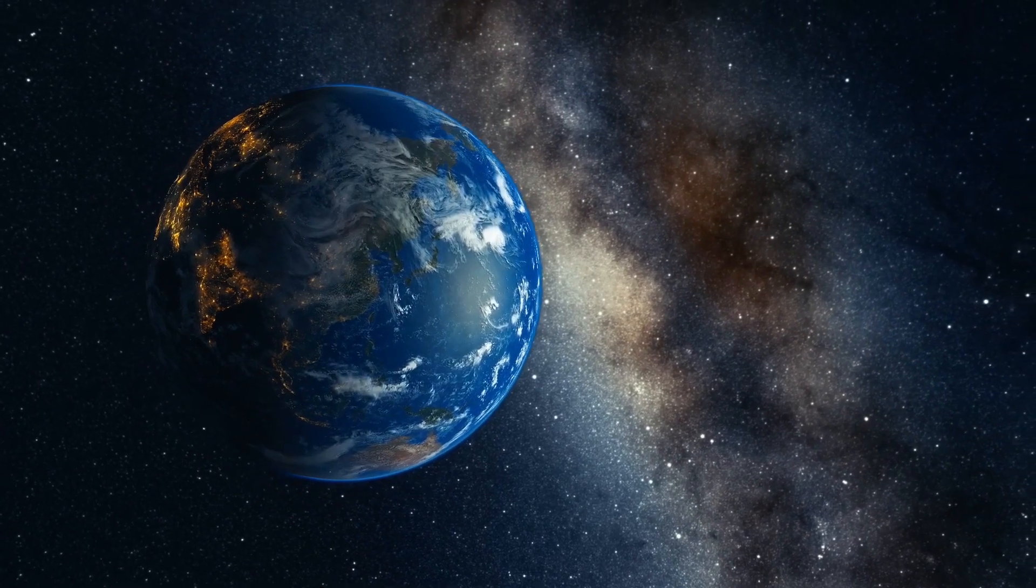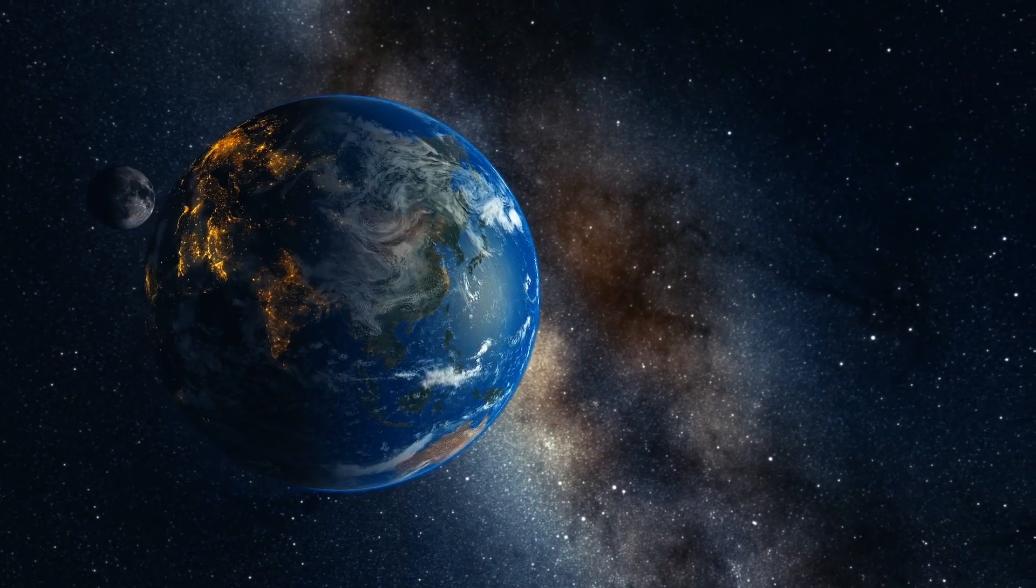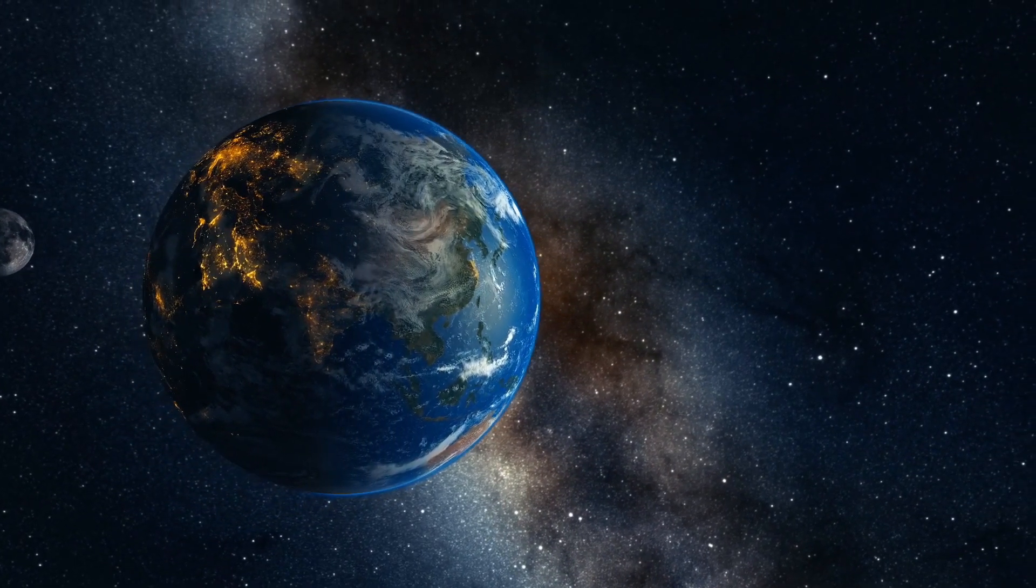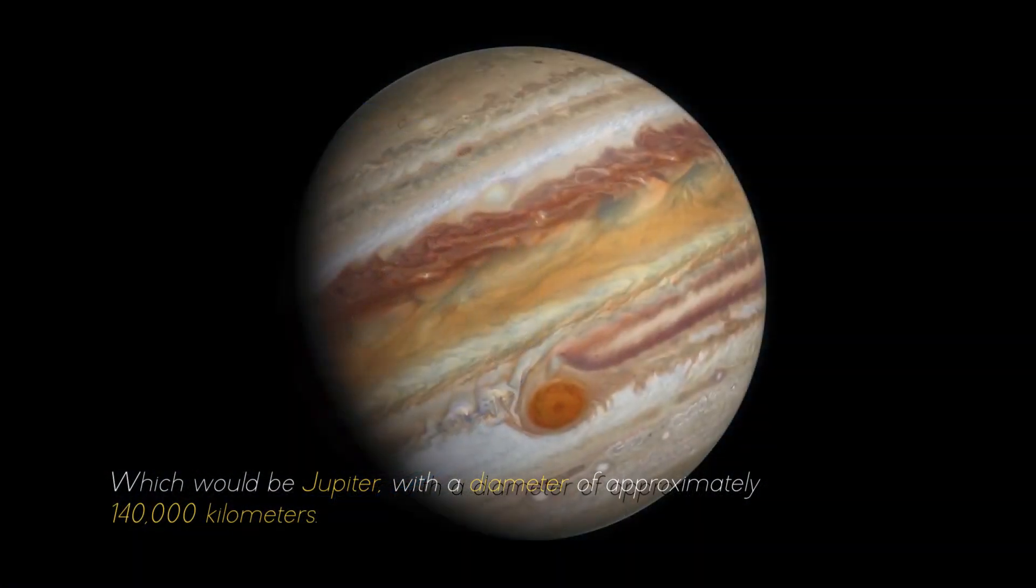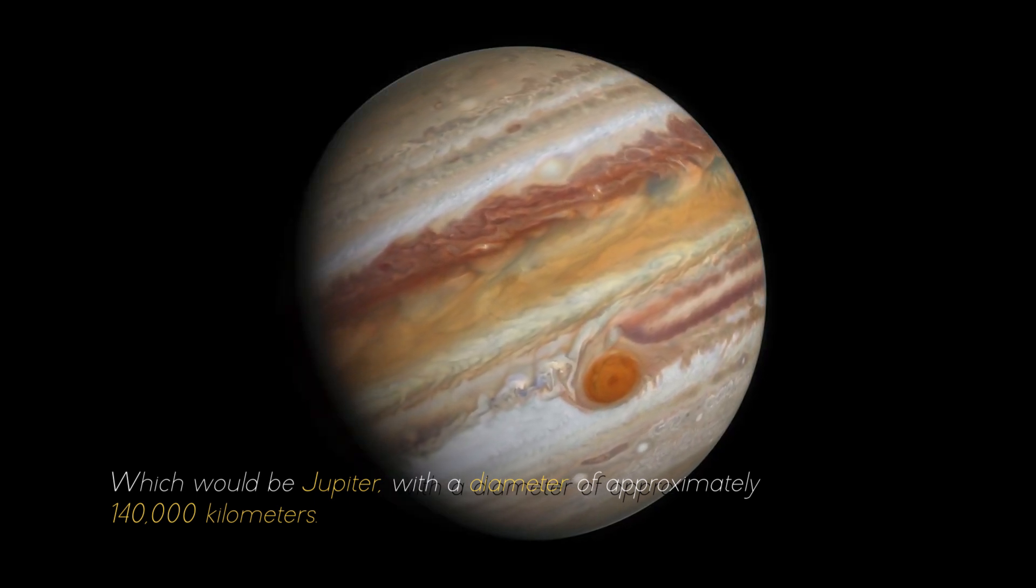If we compare it with the largest planet in our solar system, it would look like a ping-pong ball in front of a soccer ball, which would be Jupiter, with a diameter of approximately 400,000 kilometers.